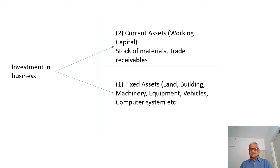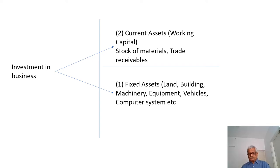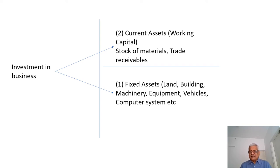Any business, whether service, trading, or manufacturing, must make certain investments initially. The first investment is in fixed assets like land, building, machinery, equipment, vehicles, and computer systems. The required fixed assets vary by business type — a hospital may need an ECG machine or X-ray machine, a factory needs land, building, and machinery, while a TV showroom needs a showroom premises, warehouse, and vehicles.